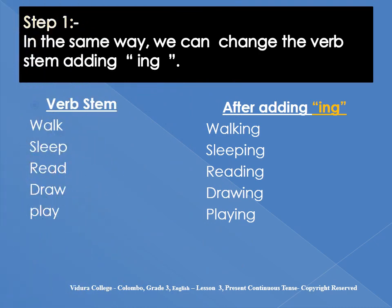In the same way, we can change the verb stem by adding -ing. Look at this verb stem: walk — when you add -ing, walking. Sleep — sleeping. Read — reading. Draw — drawing. Play — playing.